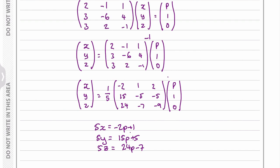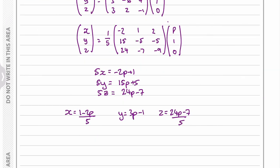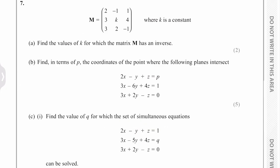So now I can rearrange each of these to find x, y and z. So in terms of p, these would be the coordinates of intersection where the three planes intersect.